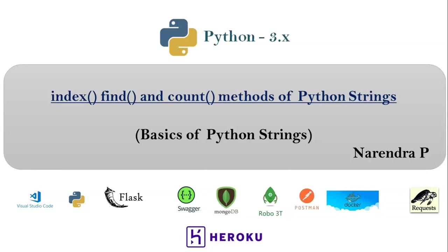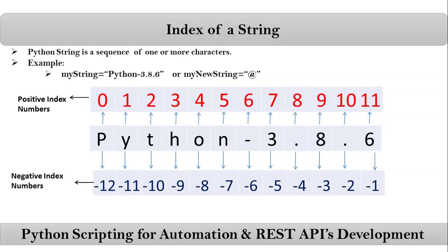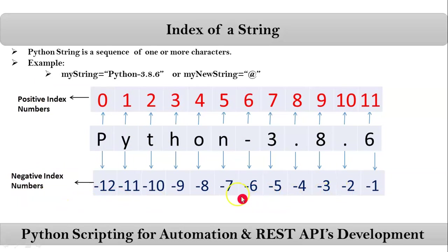Here we are discussing about the index, find, and count methods of Python strings. We already know the index concept of Python strings — Python gives some positions for each and every character in your string in terms of positive and negative index numbers. Python also provides some methods to get the index of a particular character in a given string. For that, we have methods like index and find.